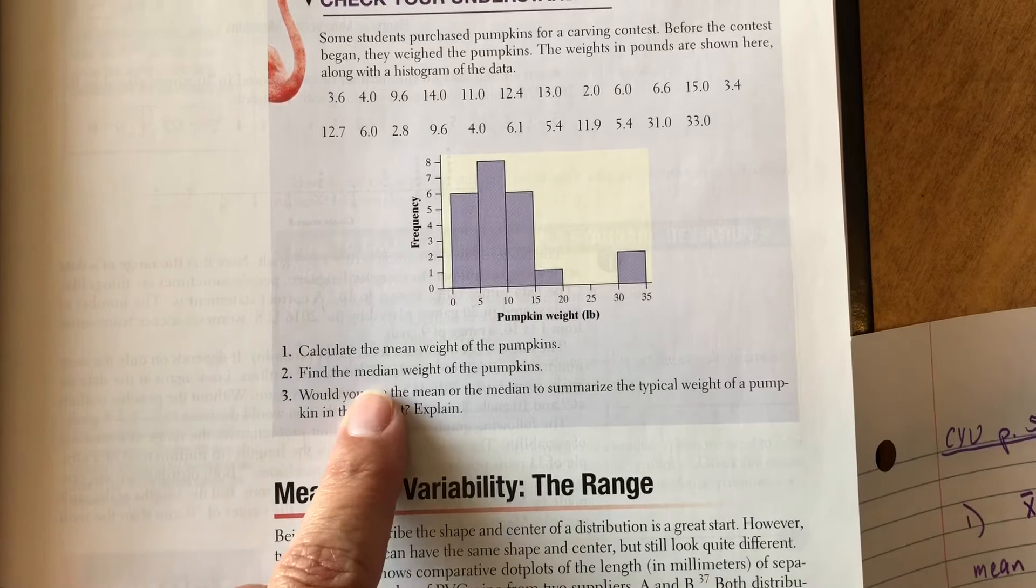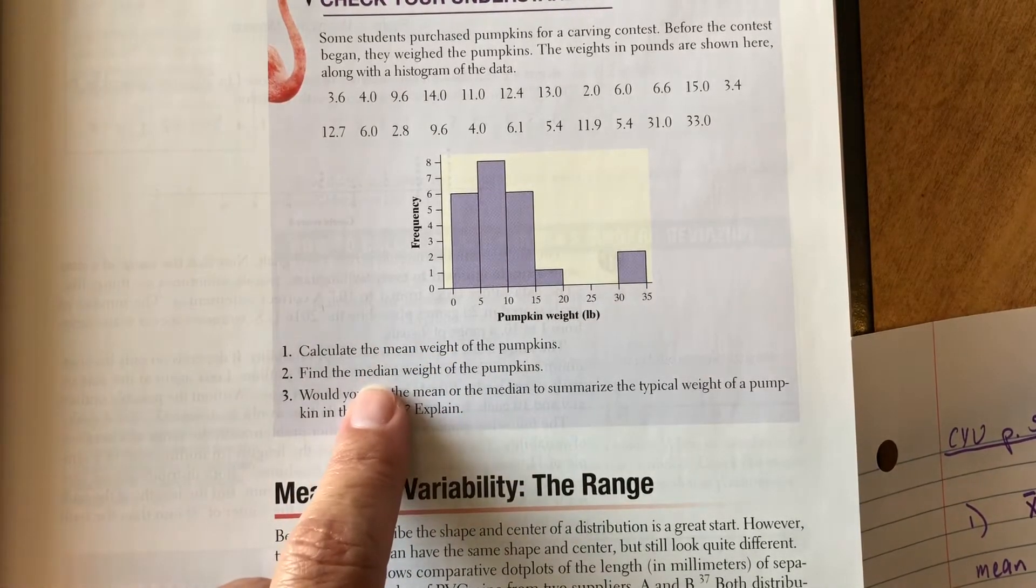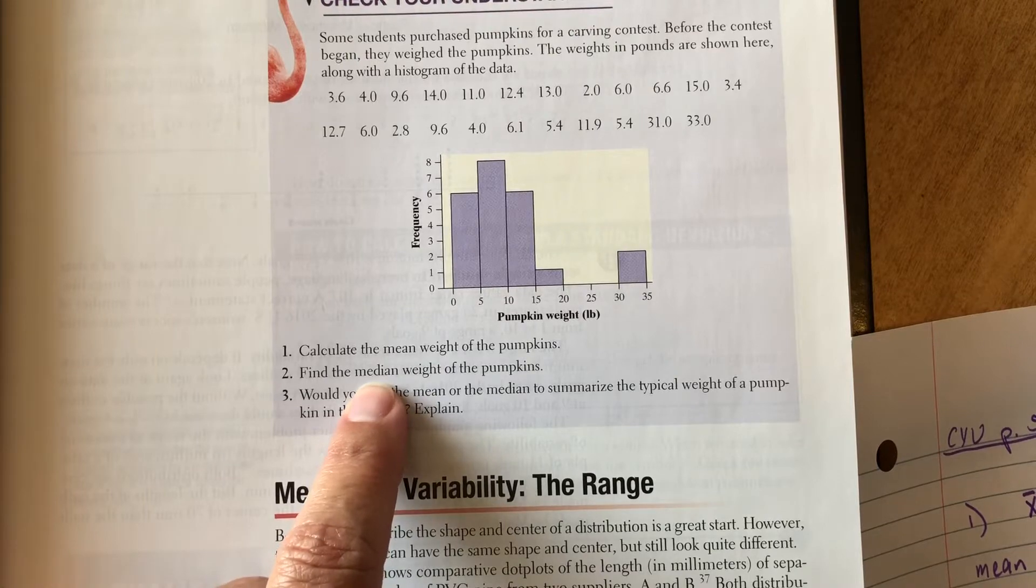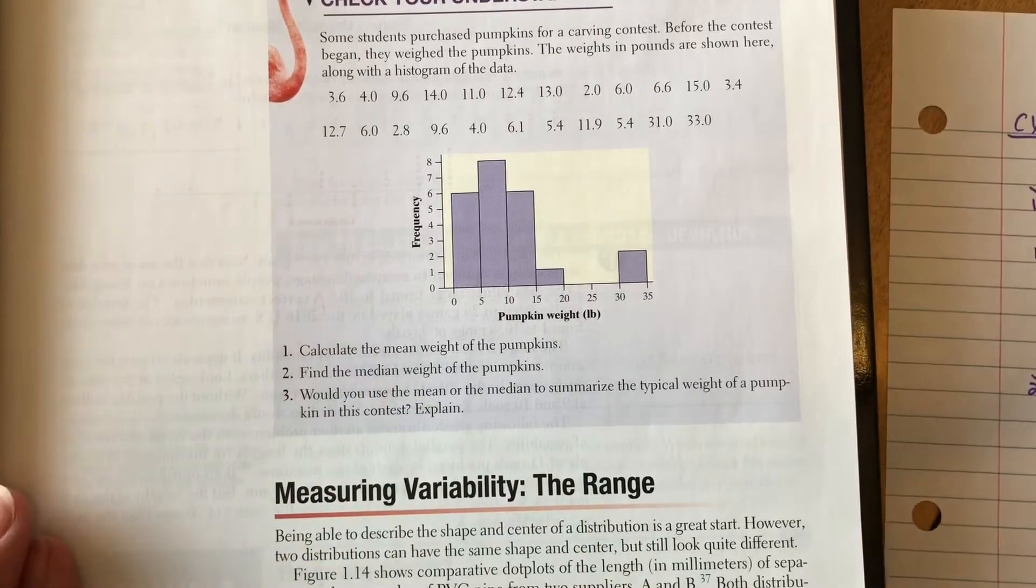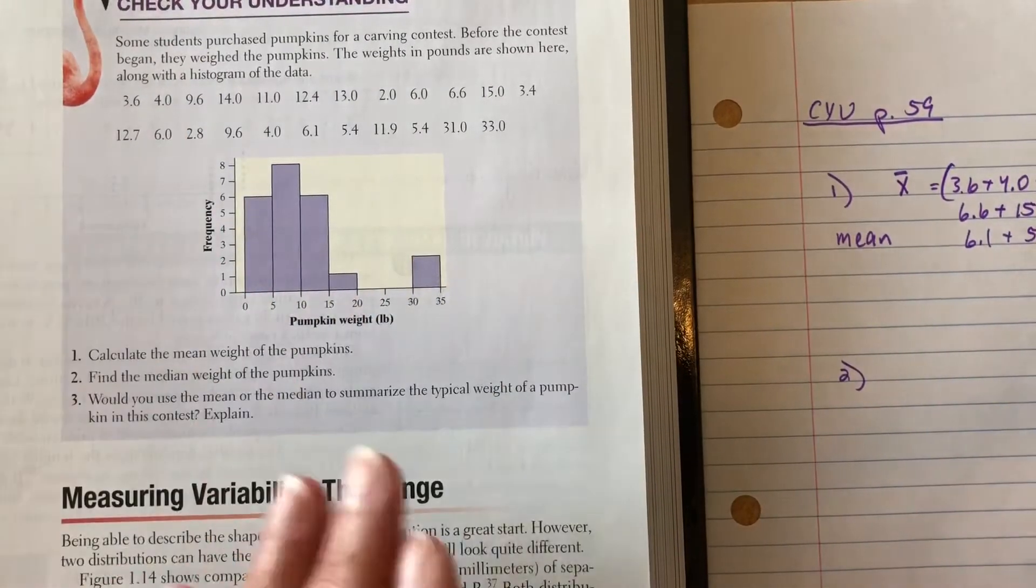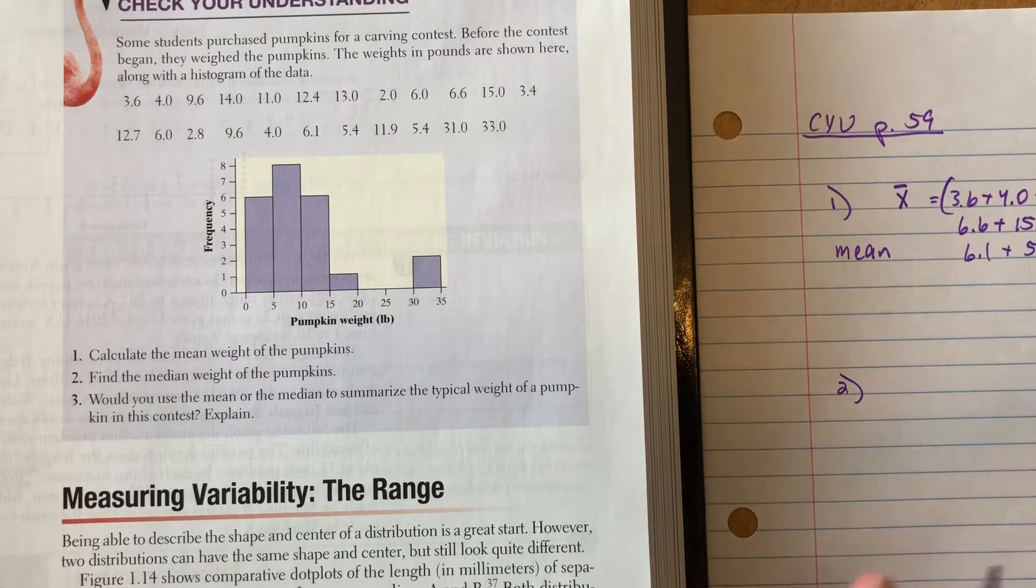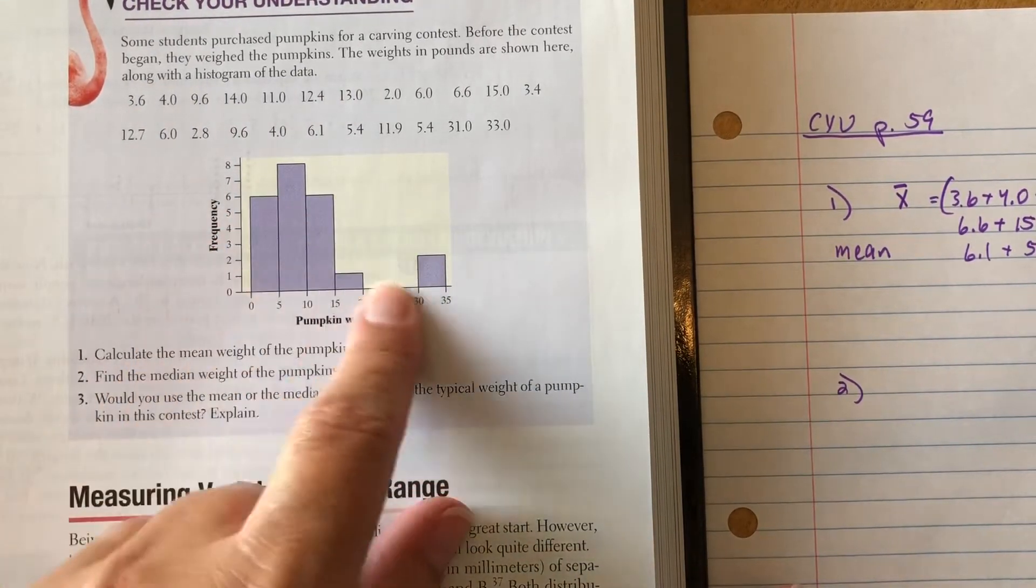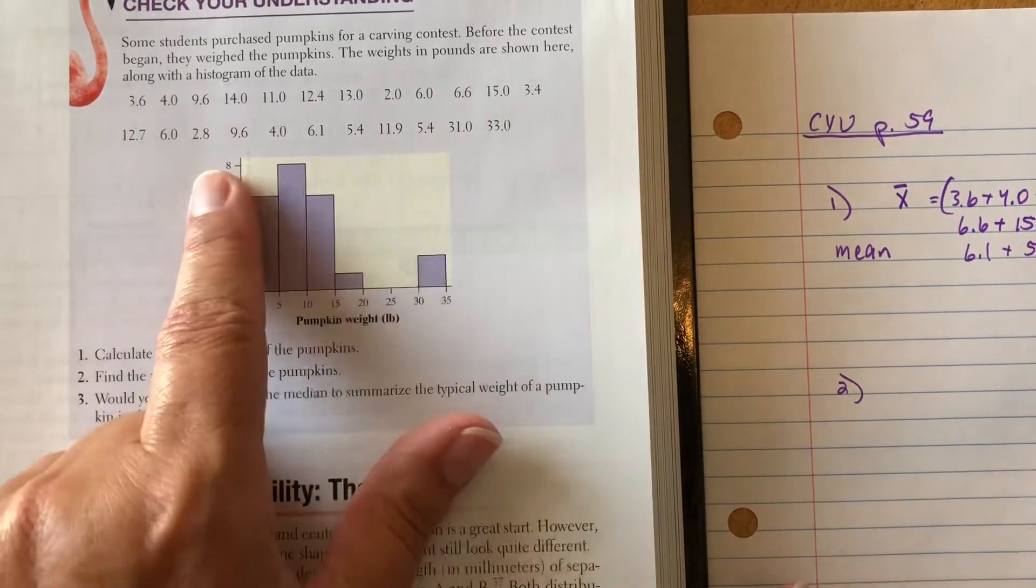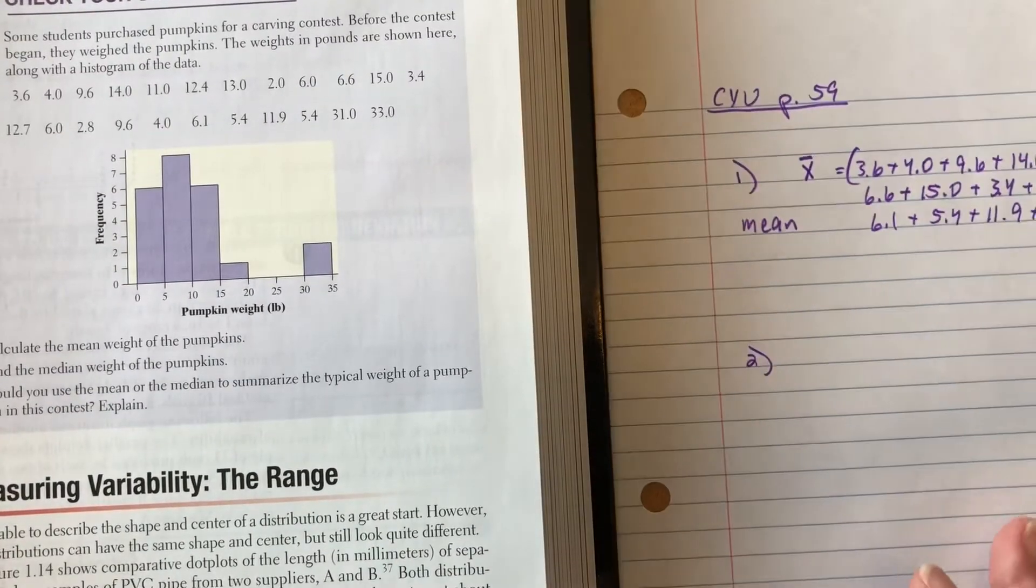Now for median, my other measurement of center, because mean and median are both measurements of center. The median is in the middle. And we've been kind of working with median because that's usually the easier one to find, especially if you don't know all the data points. So in order to find median, I need to find the middle.